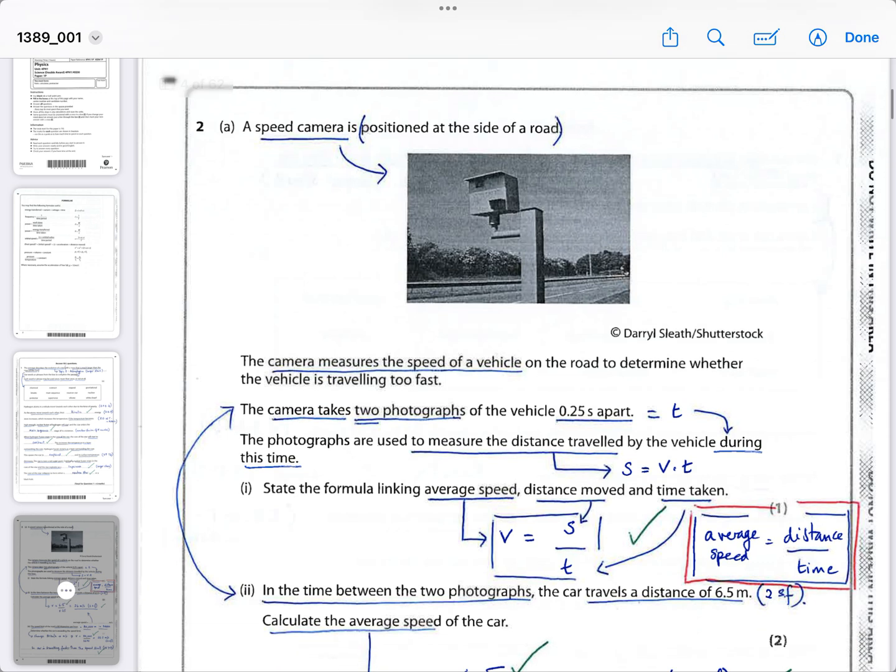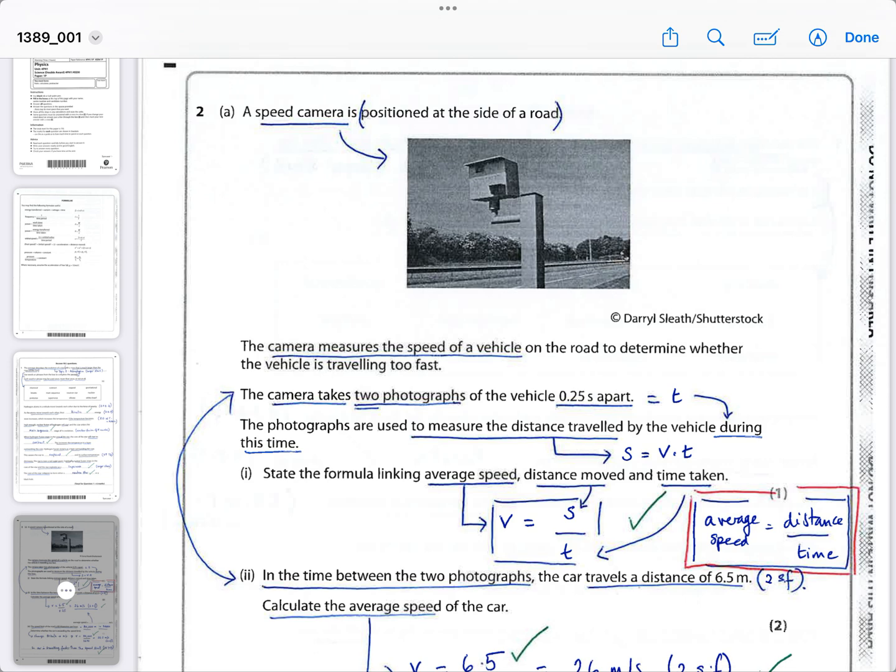Question two then is back down to earth. It's a speed camera positioned at the side of the road. This camera measures the speed of the vehicle on the road to determine whether the vehicle is traveling too fast or not. I recently gave this to my year 10 students as well as a practice exam, and most of them found it okay to do. The camera takes two photographs of the vehicle as it drives past, and the two photographs are taken exactly 0.25 seconds apart, so you know the time between the two photographs. The photographs are then used to measure the distance traveled by the vehicle during this time, where we know that the distance s is equal to the velocity the car is traveling at times the time, which is fixed.